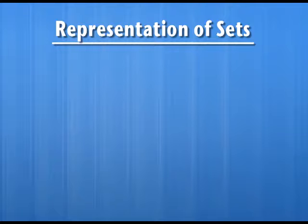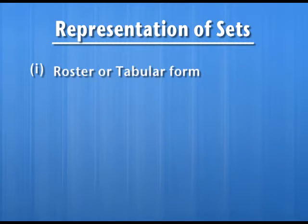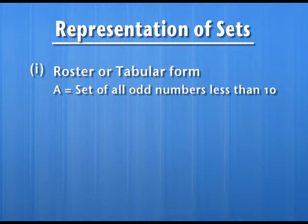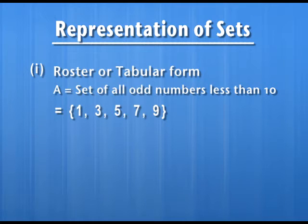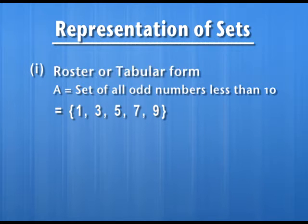Now let us learn how do we represent sets. Suppose we have to consider the set of all odd numbers less than 10. Then the numbers would be 1, 3, 5, 7, and 9. We list all these numbers as shown here, separate them with commas, and put them between curly brackets. This way of representing the set is known as roster form or tabular form.